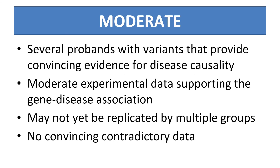For gene disease associations with moderate evidence, there are typically several unrelated probands with variants that provide convincing evidence for disease causality and moderate experimental data supporting the gene disease association. The role of this gene in disease may not have been independently reported; however, there should not be any convincing evidence that contradicts the role of the gene in this noted disease.